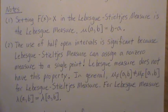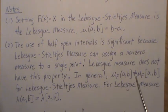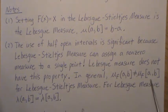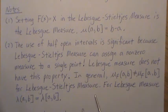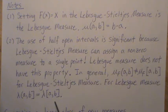The Lebesgue measure does not have this property. In general, for Lebesgue-Stieltjes measure, μ(a,b] does not equal μ[a,b]. But for Lebesgue measure, the measure of the right semi-closed interval equals the measure of the closed interval.